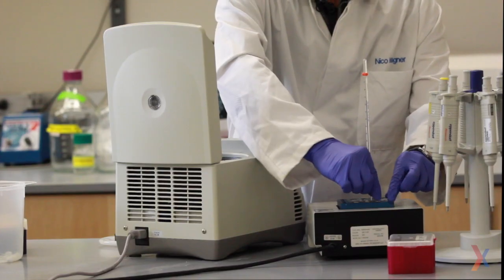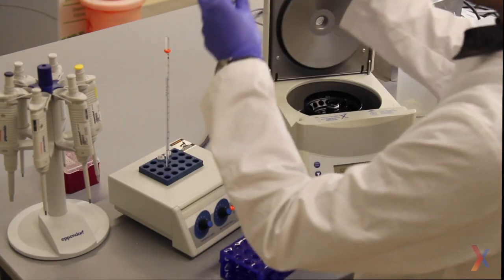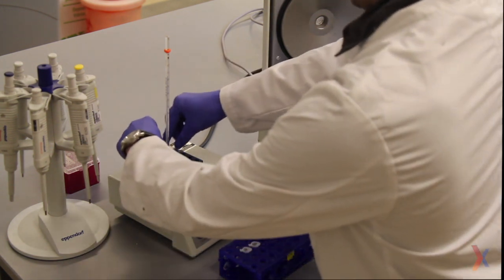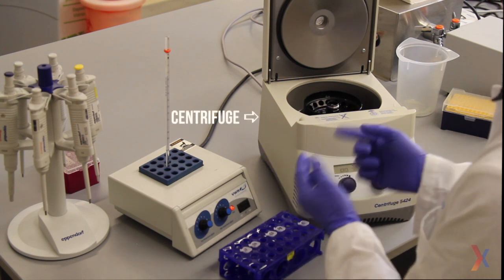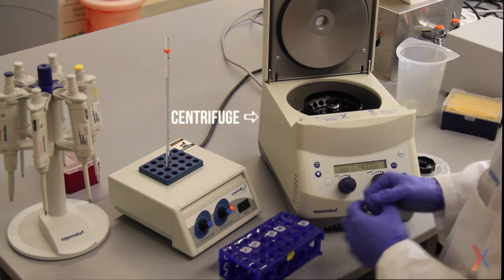After five minutes we can come back and take our samples back out of the heat block. Just in case anything crawled up along the sides of the tubes, we put them in the centrifuge for a very quick spin.